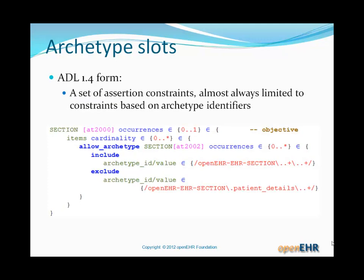The ADL 1.4 form of a slot is a set of assertion constraints, almost always limited to constraints based on archetype identifiers. You can see the definition here, where for the items attribute of the top section, we have a slot defined using the allow_archetype keyword. It's also a type section. It has an AT code saying what its meaning is, and then you can see an include and an exclude assertion constraint.